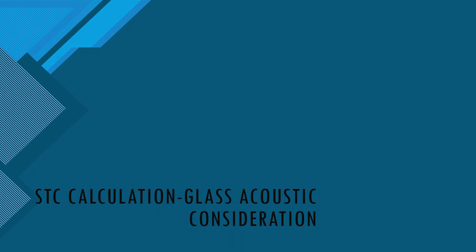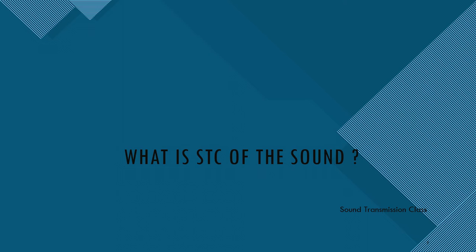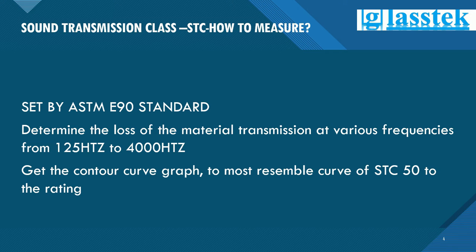Depending on the function of a project, sometimes we need to specifically consider sound transmission. Sound transmission considerations generally come up in places where we want to keep sound either in or out — like a sound studio, a road-facing exterior wall, or a bedroom above the garage. When evaluating building materials and acoustic products for sound reduction, we rely on the Sound Transmission Class, or STC rating, of the product.